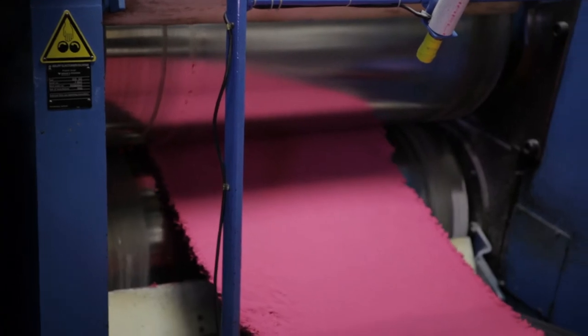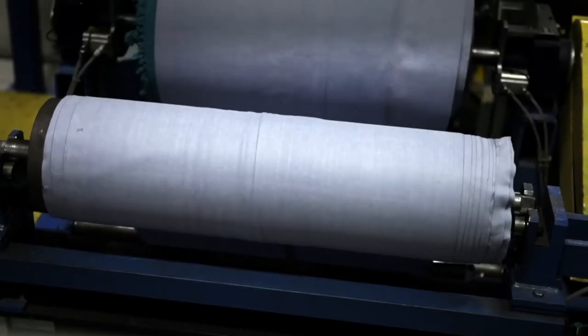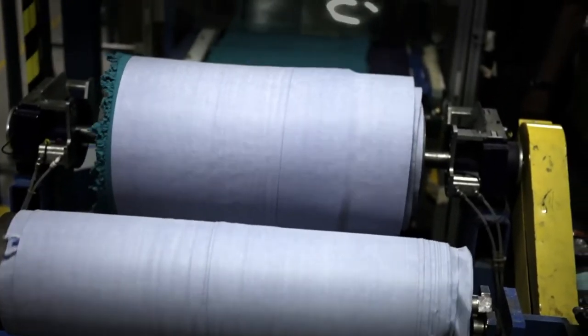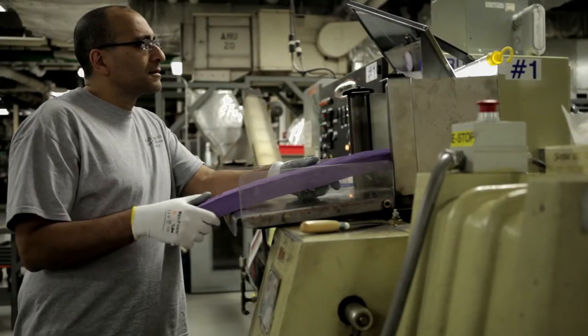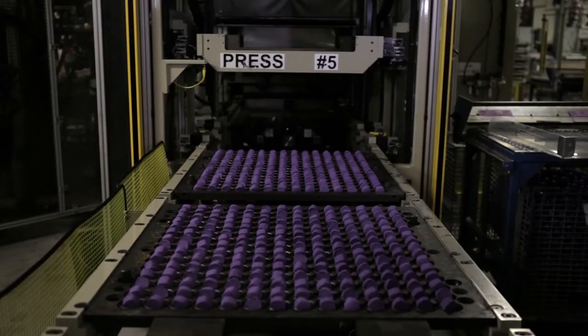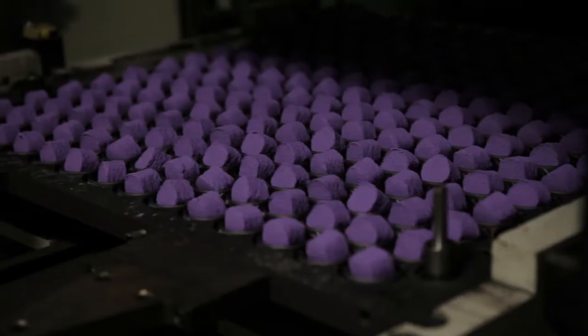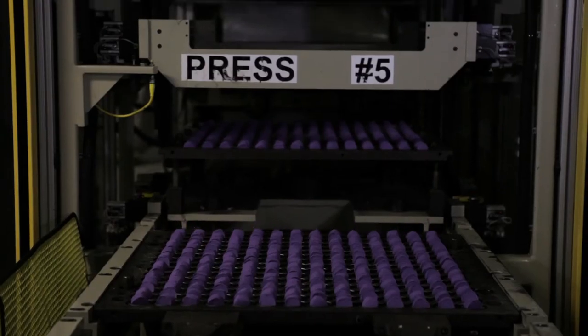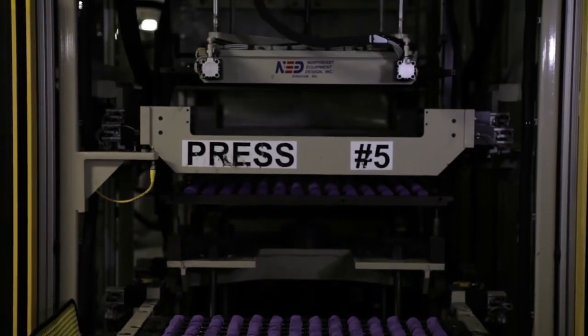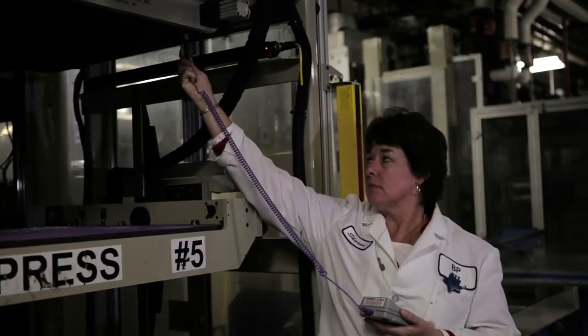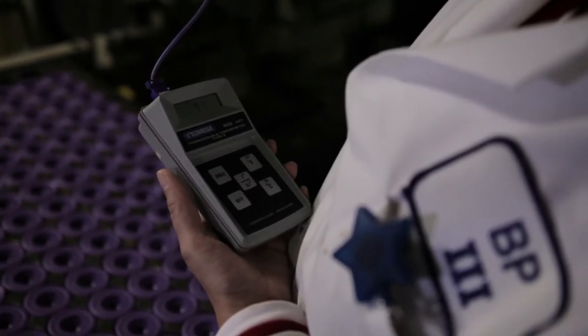The process begins at core mixing where every Titleist golf ball has its own unique formulation. Extruded blanks are then compression molded into cores. Quality technicians monitor the molds to ensure the proper cycle time and consistent temperature.